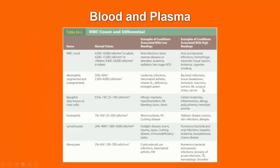The white blood cell count and differential shows the different types of cells within the subcategory of white blood cells. When someone goes into an urgent care or emergency room, a blood count is often done to determine if they have a bacterial infection. Bacterial infections will cause the white blood cell count to go up even higher than viral infections. It is recommended to understand what each type of white blood cell does.